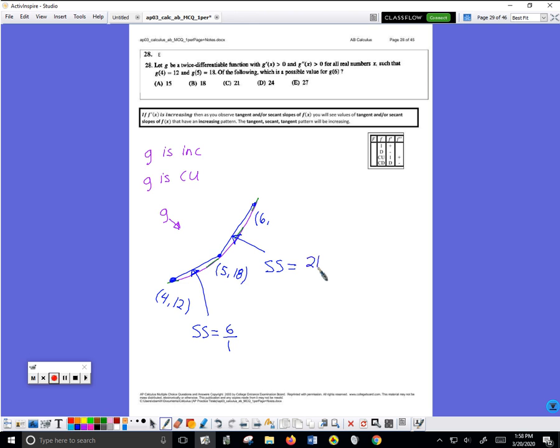And then the x coordinate would be going up by 1, but that doesn't work because that would make this secant slope 6 and this secant slope 3.